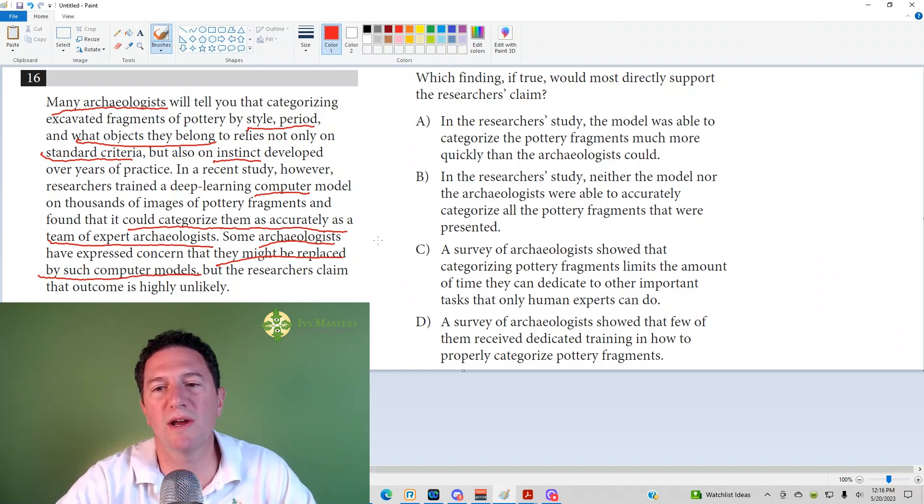So what's finding if true would most directly support the researchers' claim? Answer choice A. In the researchers' study, the model was able to categorize the pottery fragments much more quickly than the archaeologists could. This is wrong for a couple of reasons. Number one, it's talking about accuracy, not quickness. And it does not say that one could do it more accurately or more quickly than the other, but it just says as accurately as the other. Yeah, as accurately as is right there. So A is gone.